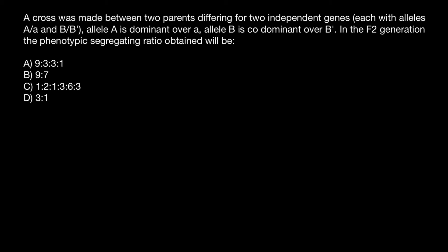Hello and welcome to Nikolay's genetics lessons. Today's problem I got from one of my subscribers. A cross was made between two parents differing for two independent genes, each with alleles — a dominant and recessive allele A, and alleles B and B'. Allele A is dominant over recessive allele a, and allele B is co-dominant over the B' allele. In the F2 generation, the phenotypic segregation ratio obtained will be — and you have to choose one of these answers.